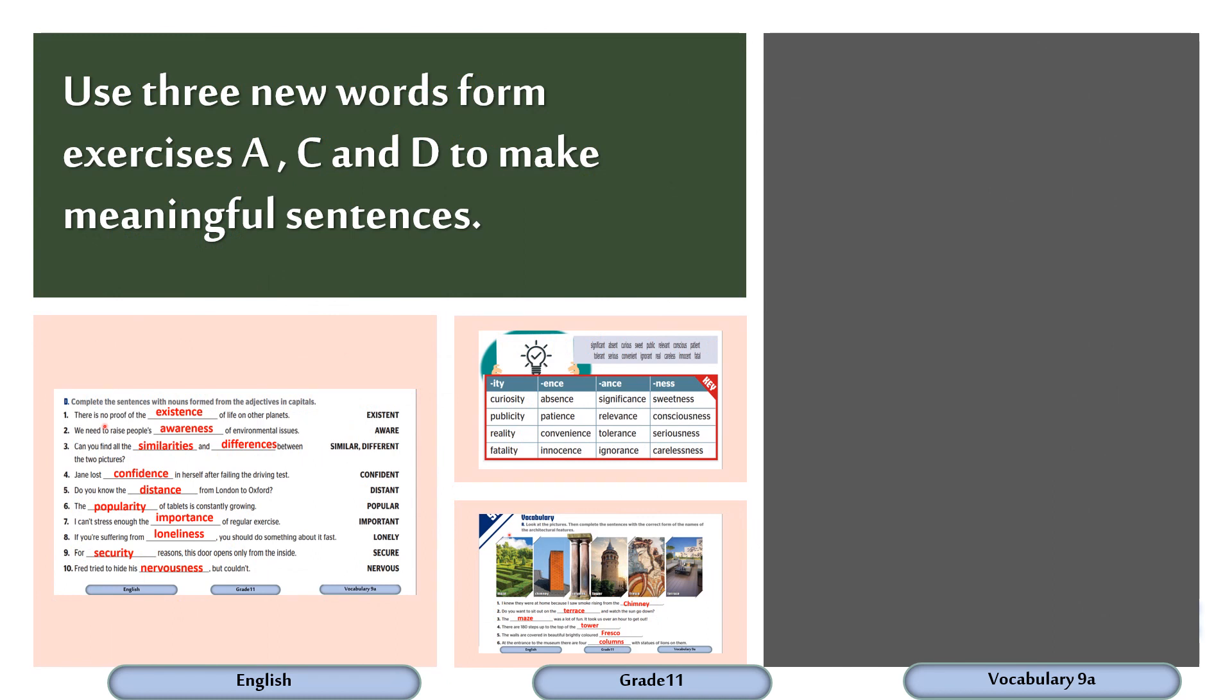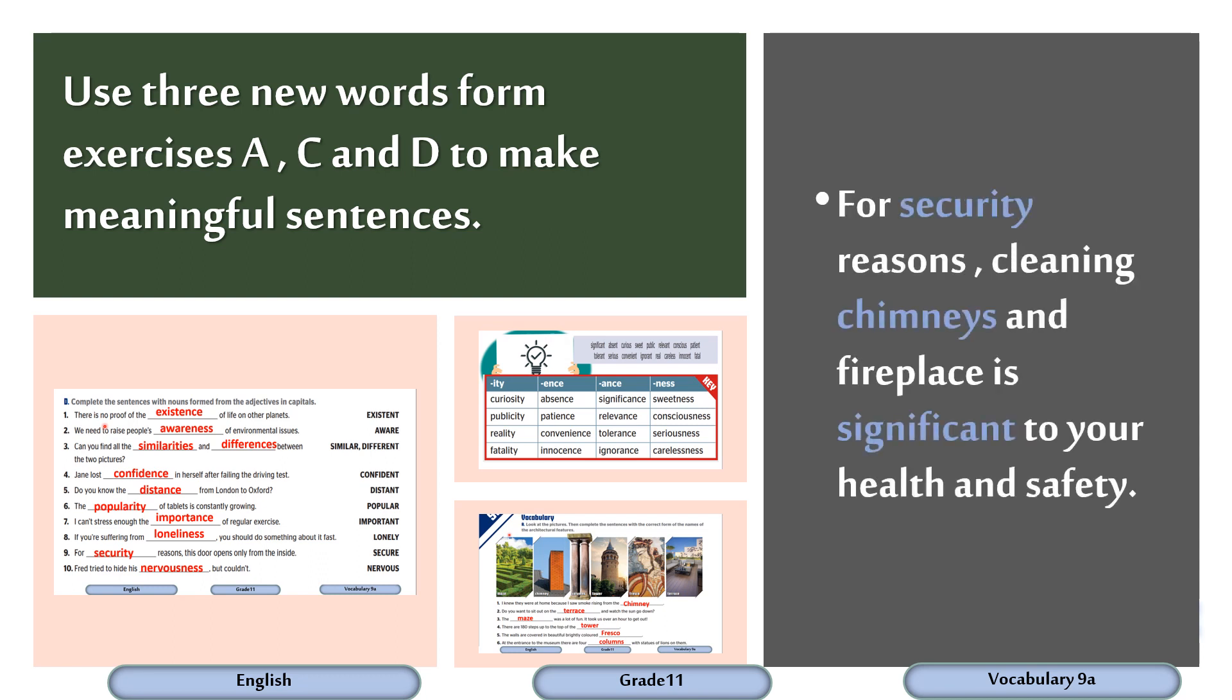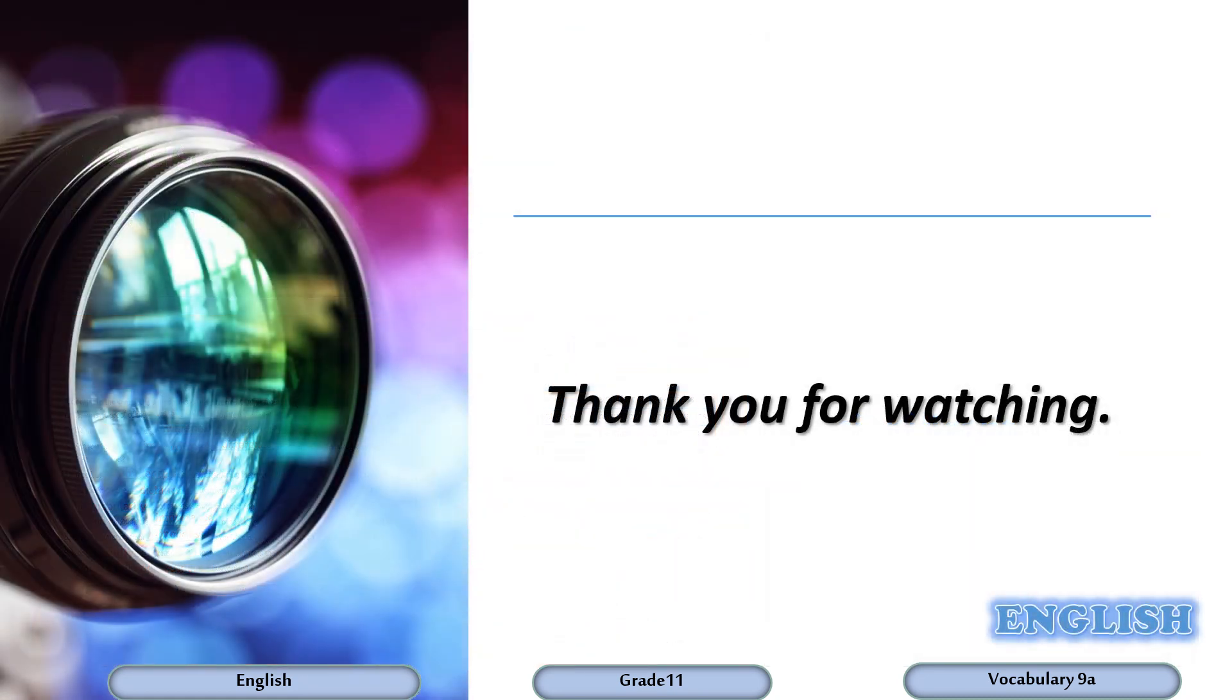Now let's demonstrate understanding and learning and use three new words from exercises A, C, and D to make meaningful sentences. I advise you to write as many sentences as you can. Let's share a suggested example. For security reasons, cleaning chimneys and fireplace is significant to your health and safety. So, security is taken from exercise number D, chimney is taken from exercise number A, and significant is taken from exercise number C. This is all for today. Thank you for watching.